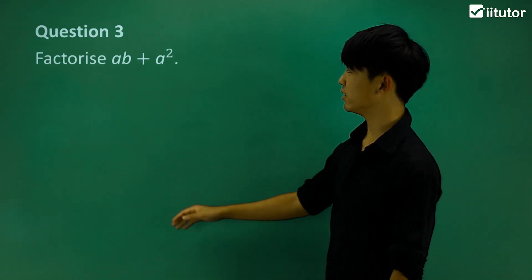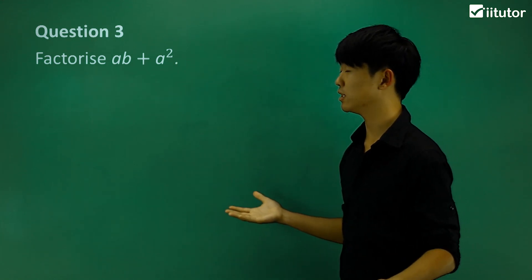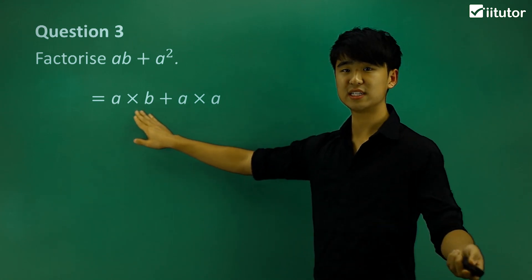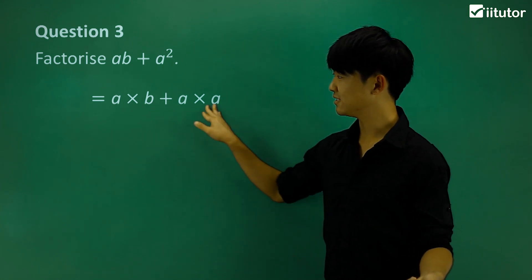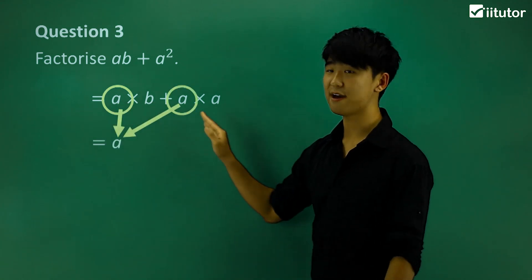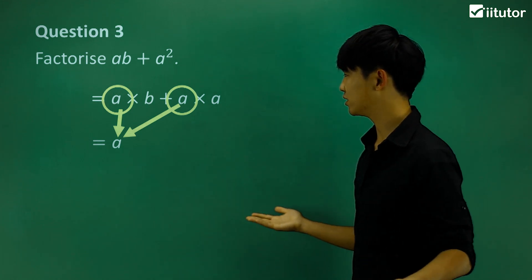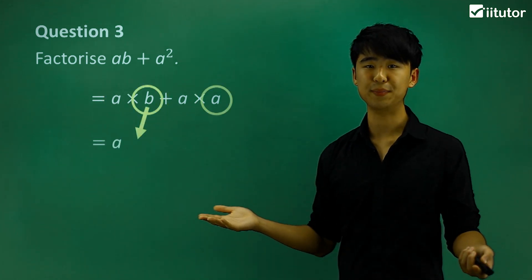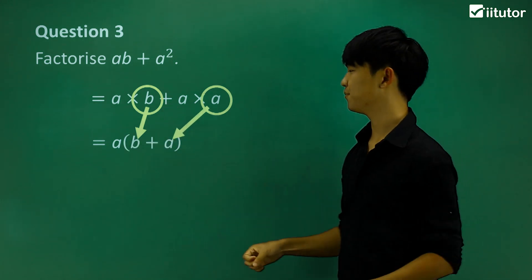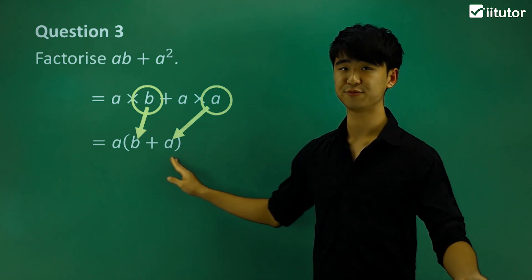Question 3: factorize AB plus A squared. Listing out all the factors to see what they both contain — they both have As, so I'm going to take that out. What's left? I have a B left and I also have an A left, joined with a plus. So A outside of bracket B plus A is my factorized version.